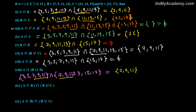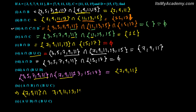Now A intersection B, and then intersection with B union C. We already found A intersection B is {7, 9, 11}. B union C we already wrote — that is {7, 9, 11, 13, 15}. What is common between {7, 9, 11} and {7, 9, 11, 13, 15}? The answer is {7, 9, 11}.